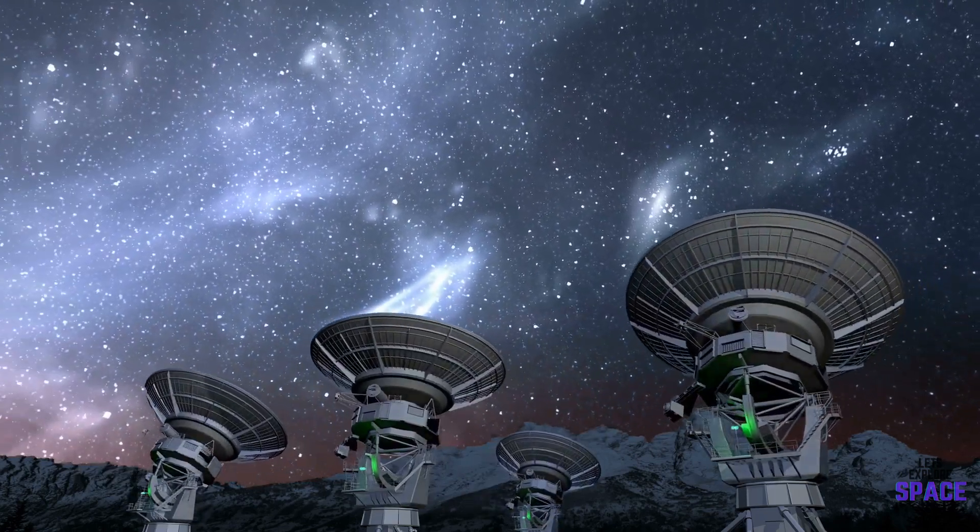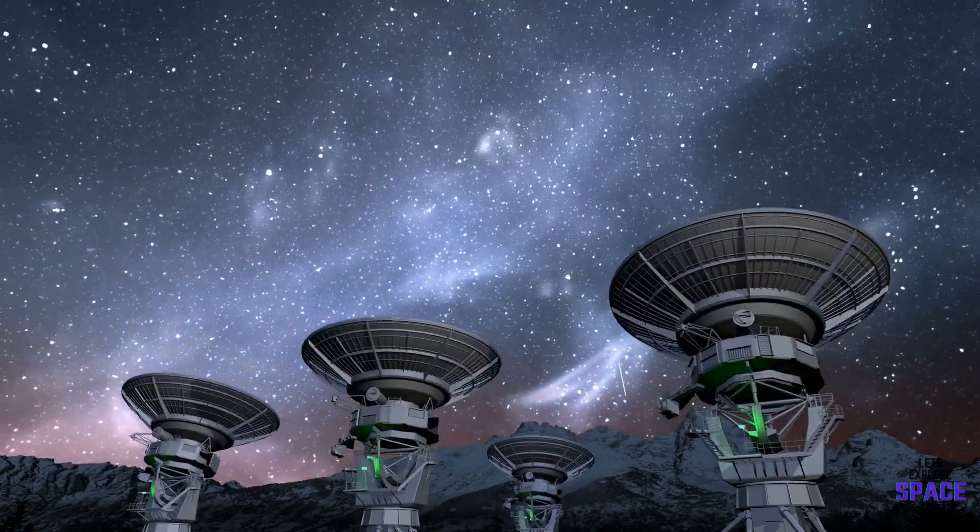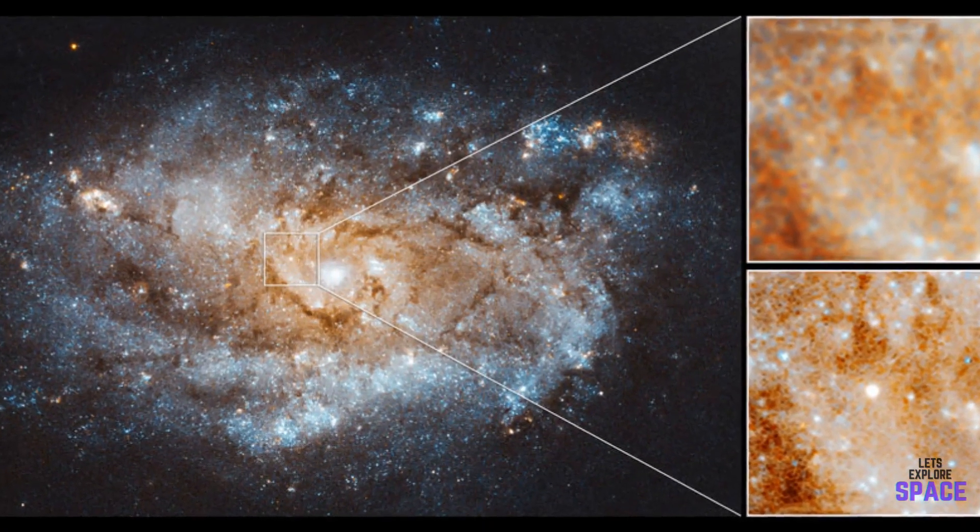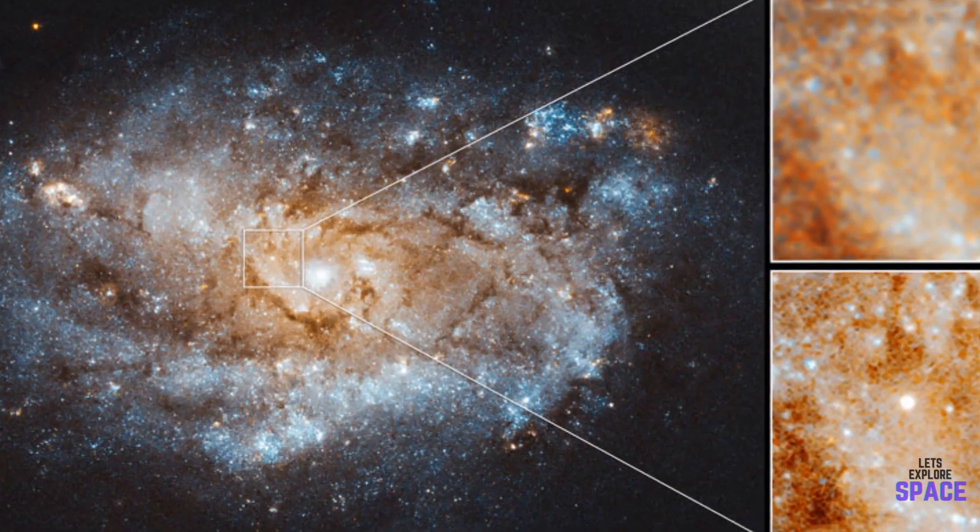However, there are estimated to be between 700 million and 1 billion neutron stars in the Milky Way. Although, the majority of these are old and cold and don't emit a lot of radiation.